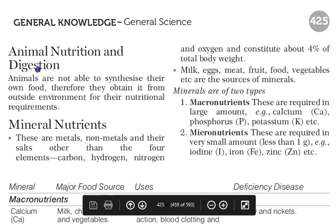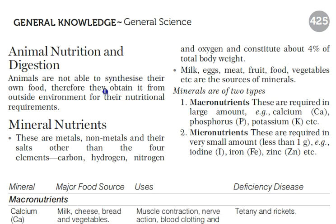Animals are not able to synthesize their own food; therefore they obtain it from the outside environment for their nutritional requirement. Unlike plants, which are able to synthesize their own food through photosynthetic reactions, animals depend entirely on external sources for nutrition.